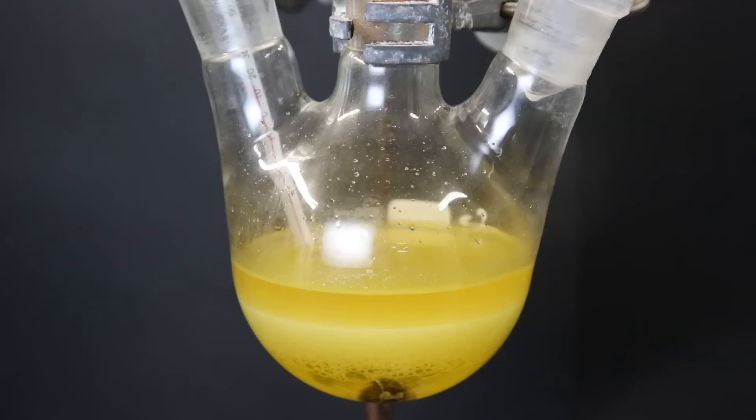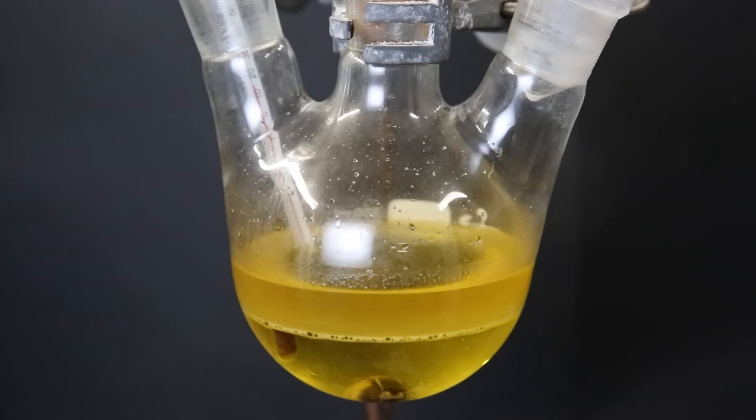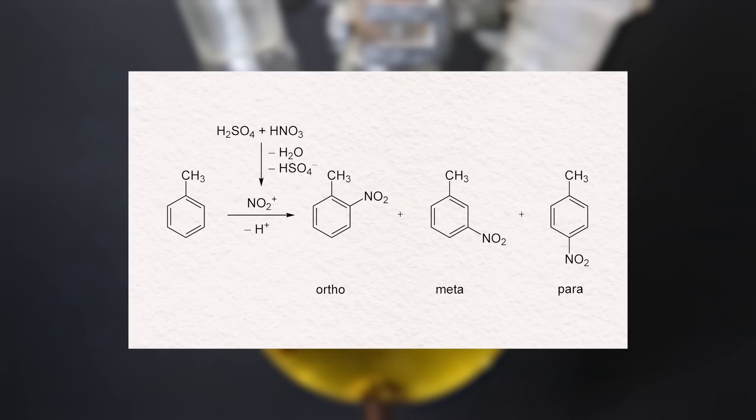I remove the flask, and we can see that instantly two layers start to separate. Here the bottom layer is the acid and the water, and on top of that is a mixture of mononitrated toluene isomers. Because toluene has a methyl group, the distribution of these isomers is heavily favored towards ortho and para isomers, because methyl groups are ortho-para directors. That doesn't mean that no meta-isomers are present, but it is less than 5%, which is not very significant.